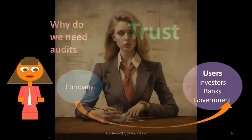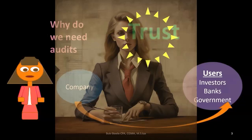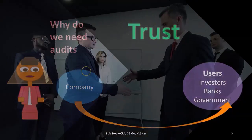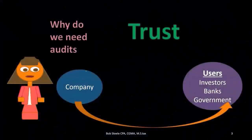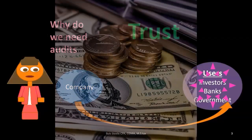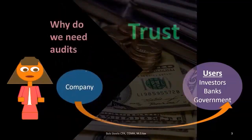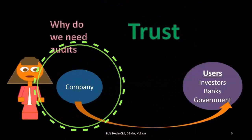So when we want to have these transactions happen, what will often limit a transaction is if there's no trust. If the investor wants to invest in the company but they don't know if the company is going to be profitable, the investor doesn't know if they're going to put the money in. If the banks don't think that the company will be able to pay back the loan plus the interest, they're less likely to give the loan. So what can the company do to give more trust?